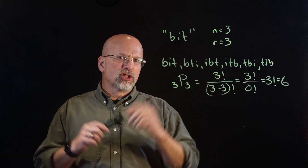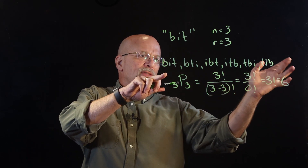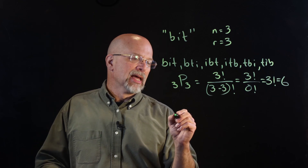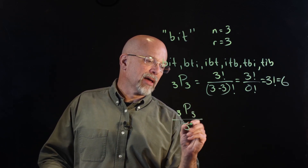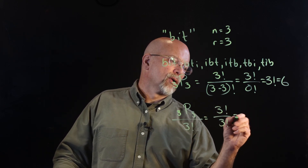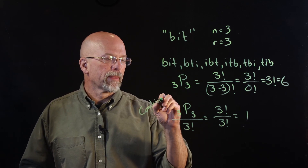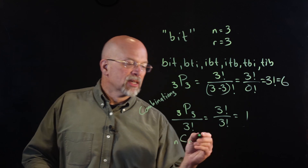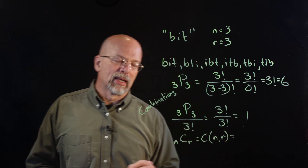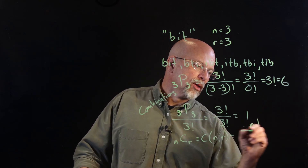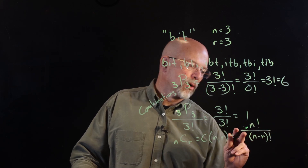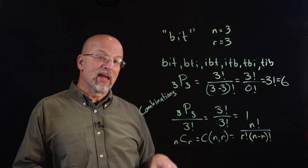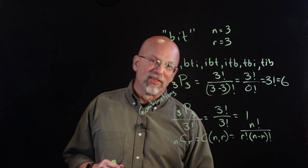Now, taking the order out: if order doesn't matter, then all of those six sequences melt down to just the one combination of B, I, and T. So what you get is 3P3 divided by 3 factorial, which is 3 factorial over 3 factorial, equal to 1. This is referred to as combinations, with notation nCr — sometimes written C(n,r). The formula is n factorial divided by r factorial times (n minus r) factorial, which divides out the ordering.